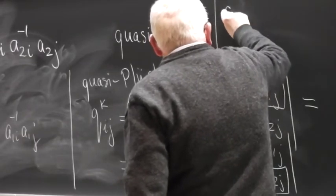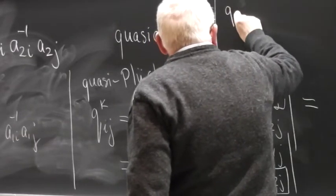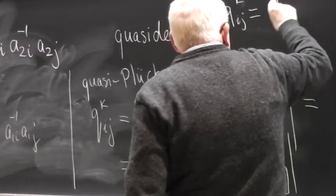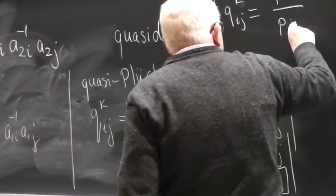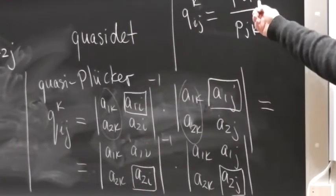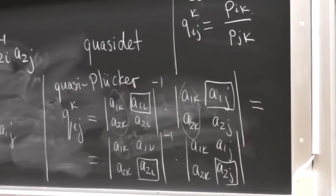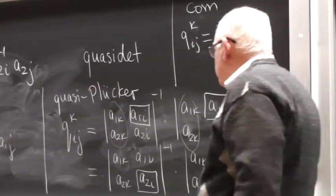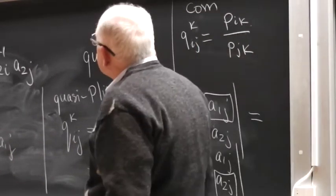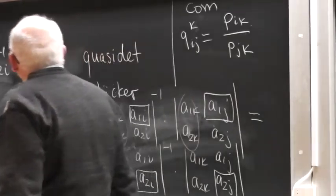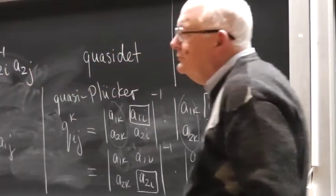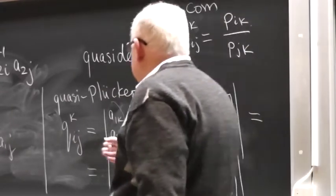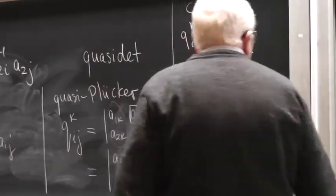Now in the commutative case, this is just k where p's are just standard Plucker chord. And the advantage is that if you just act on this matrix by GL2 over a non-commutative skew field, those are just invariants like this.